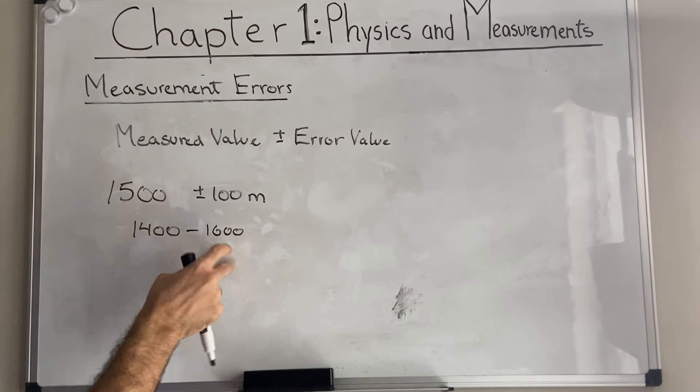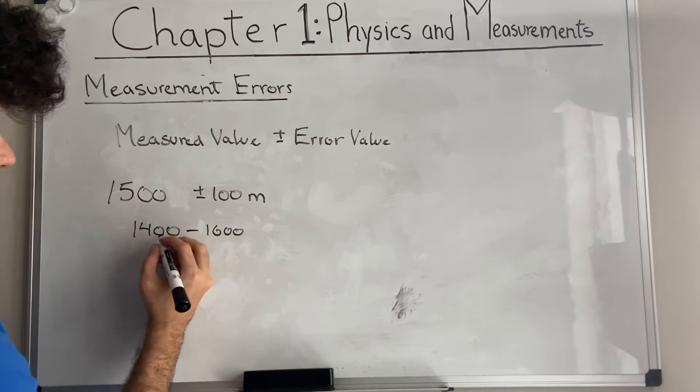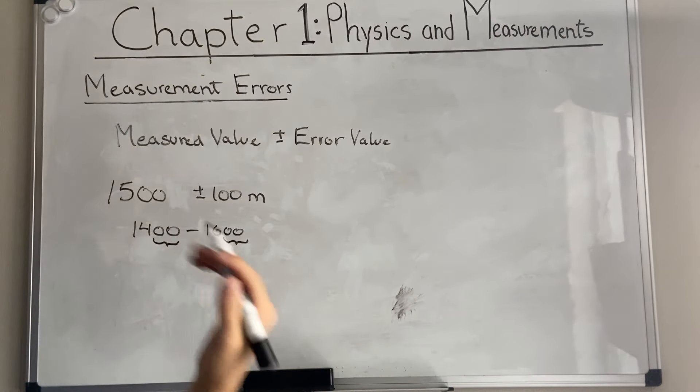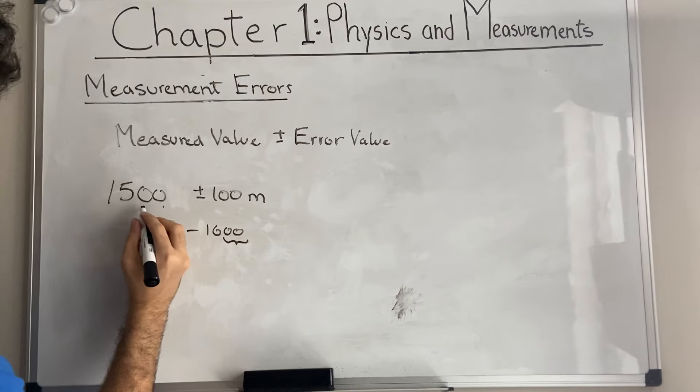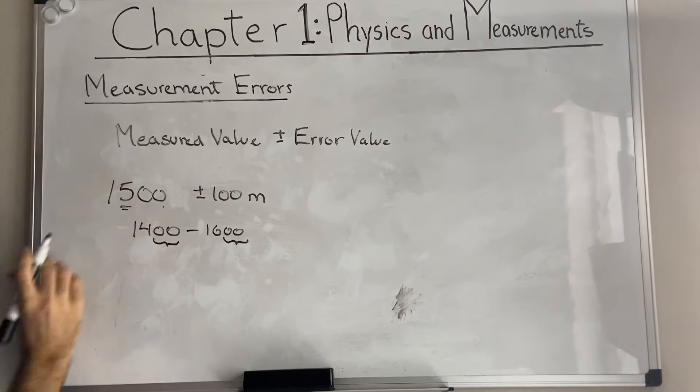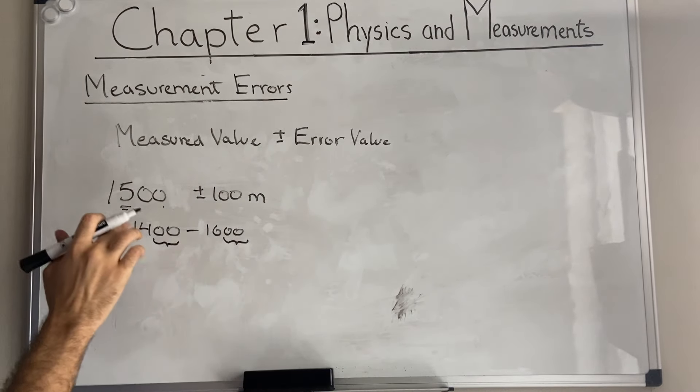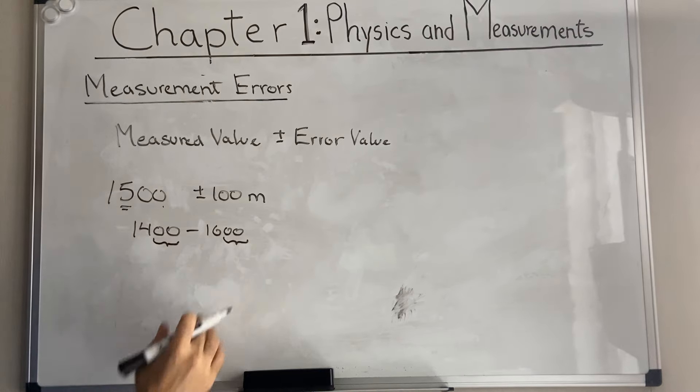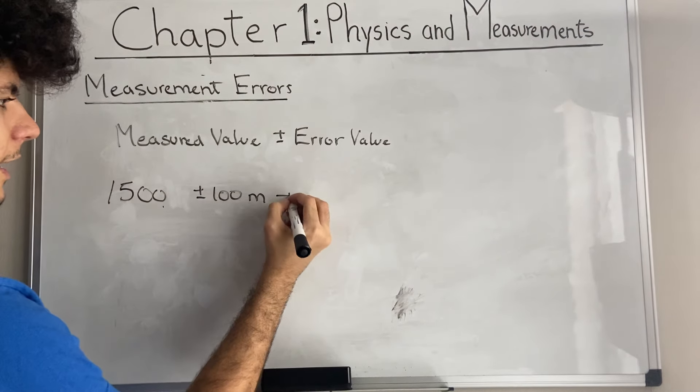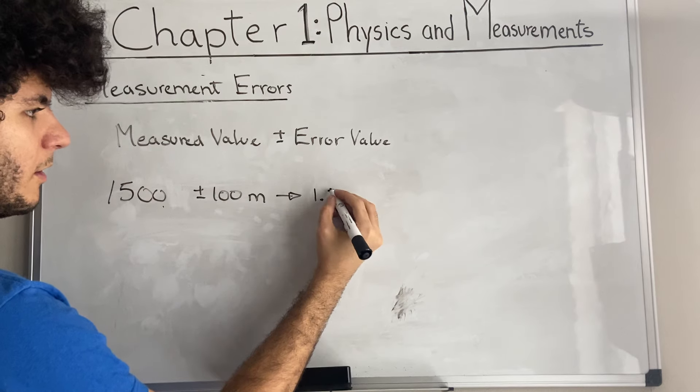When we're using measurement errors, we actually have a way of determining how many significant figures there are in a number. Allow me to explain. If we have say a length of a road and the length of the road is measured to be 1500 meters. Depending on the error value, we will have a way of knowing how many significant figures we have in the number. Say if this was 1500 plus or minus 100, I'm going to remove the unit and add it to the end. If we had this, meaning this is pretty inaccurate, let's call this like someone just eyeballing the road to just guess how long it is.